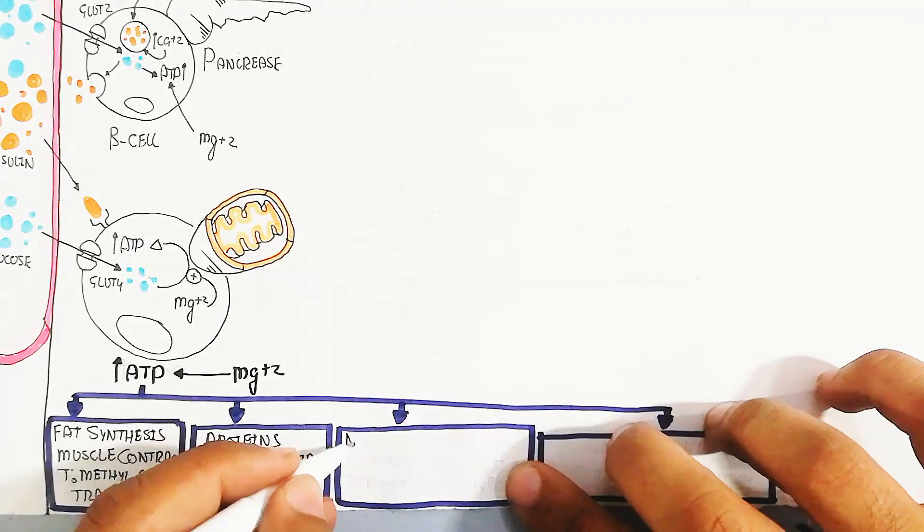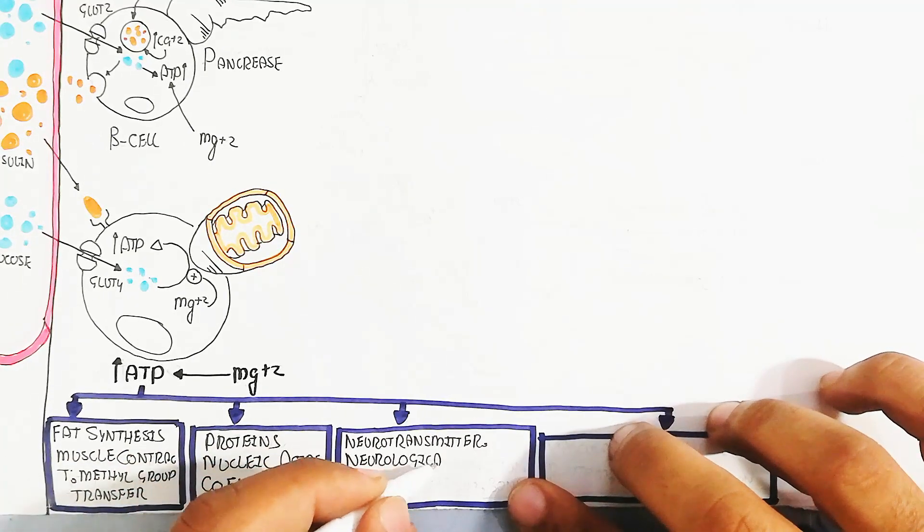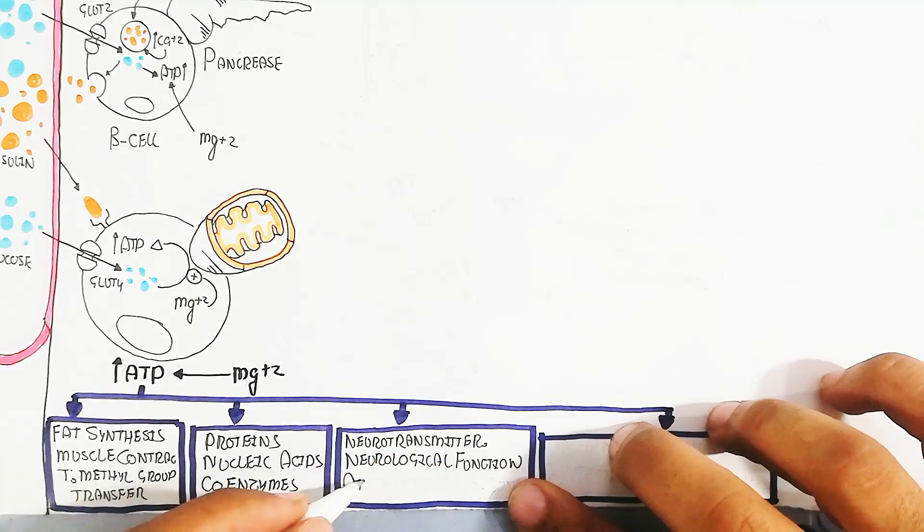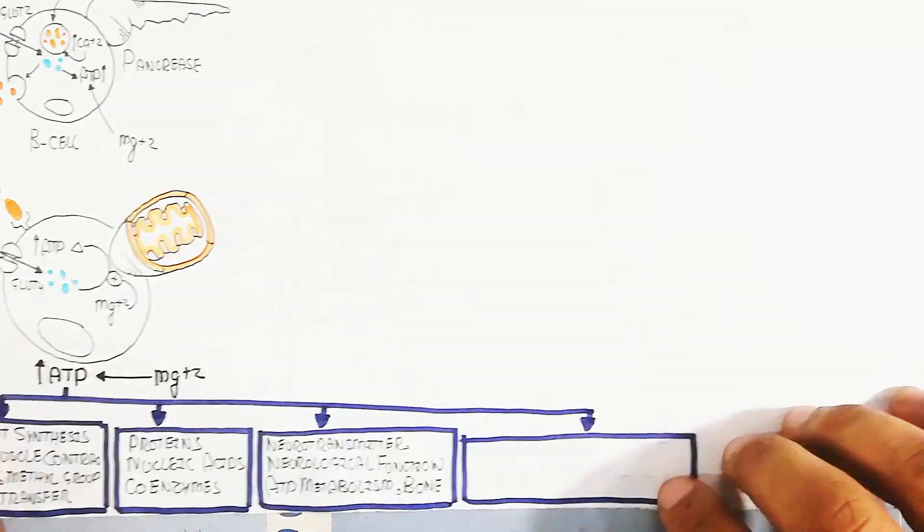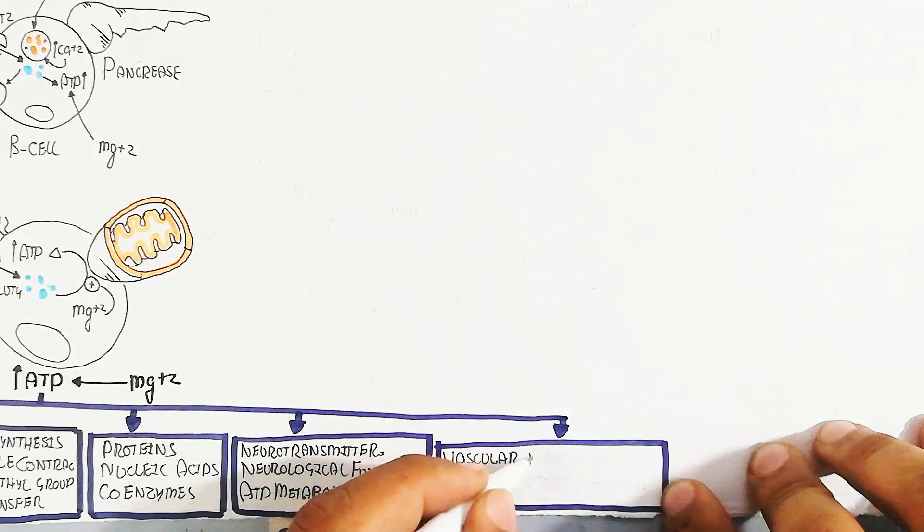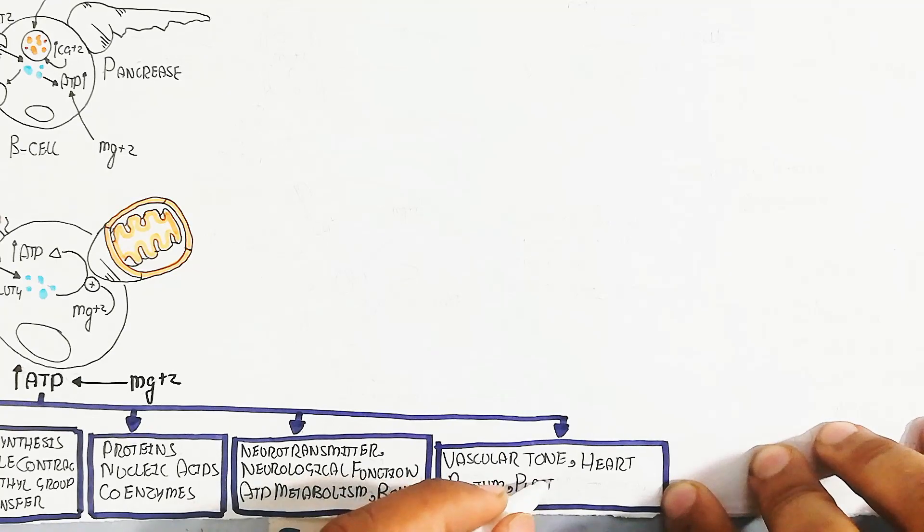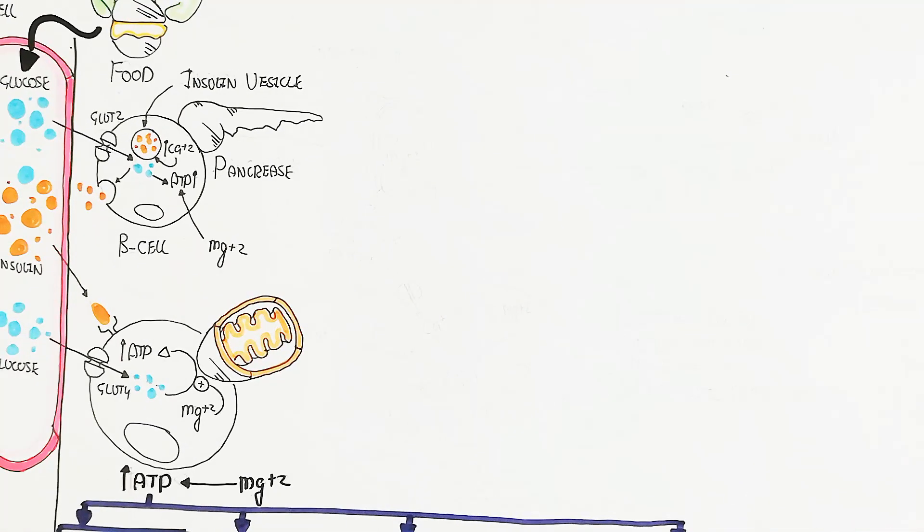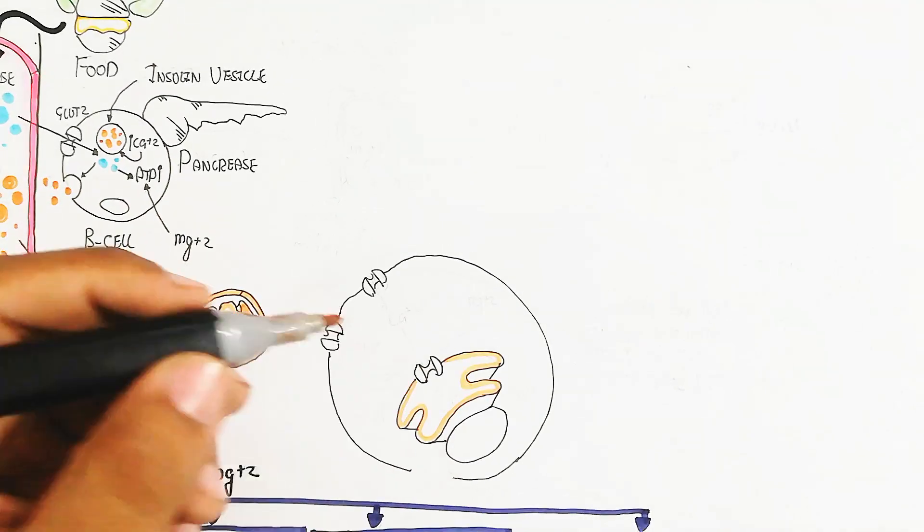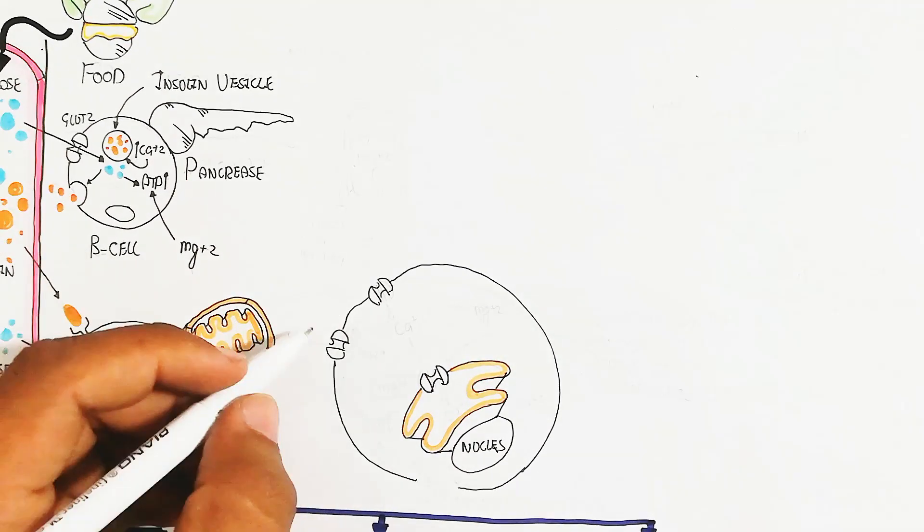On the other hand, neurotransmitter vesicles and neurotransmitter exocytosis will increase. Neurological function, ATP metabolism, bone formation, vascular tone, heart rhythm, and platelet activation will all increase.